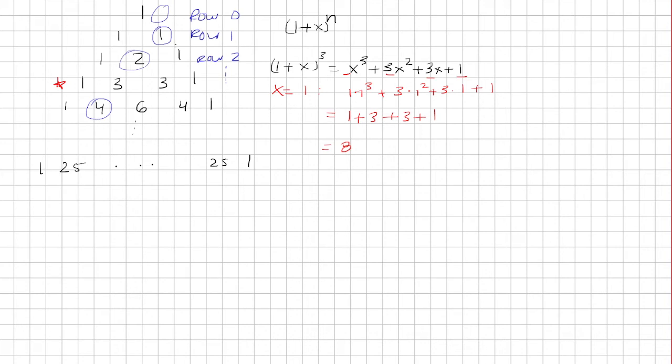So, notice that the sum here of each row will be a power of 2. Because if I set x equals 1 here to this equation, we have (1 + 1) raised to the nth power, which is 2 to the n.